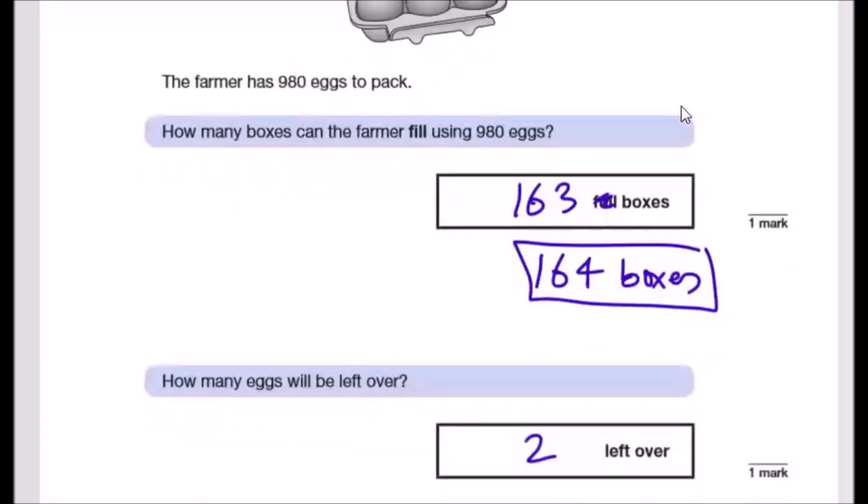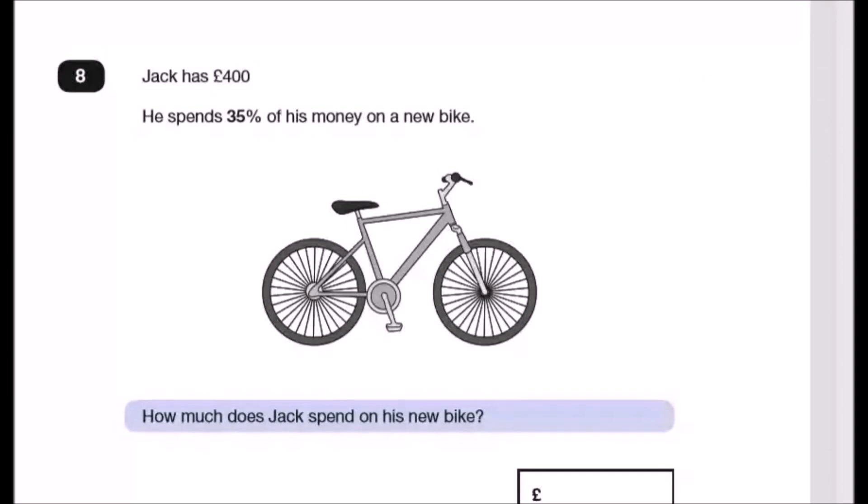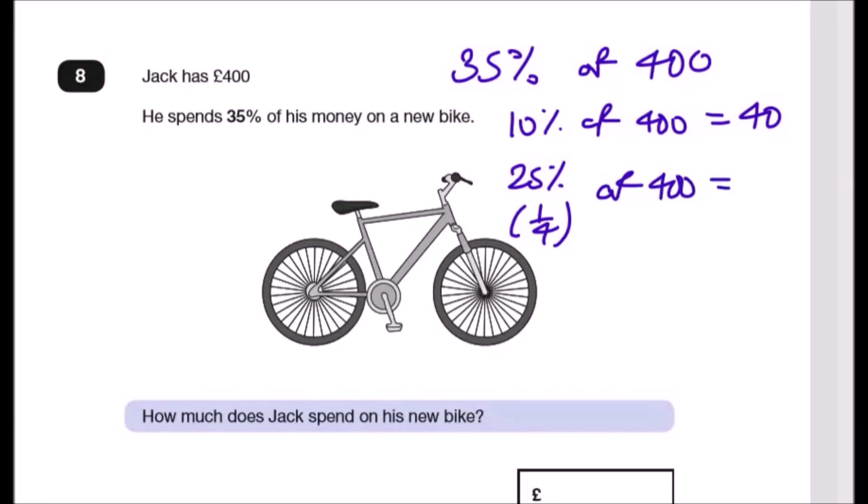Let's move on to eight. Jack has 400 pounds. He spends 35% of his money on a new bike. So 35% of 400. A trick to this is to always work out 10%. We know 10% of 400, which is divided by 10, is 40. And then you can see that you need another 25%, and 25% you need to recognize is a quarter. So a quarter of 400 is 100. And then to make 35% you just add them up. So you get 40 plus 100, that's 140.